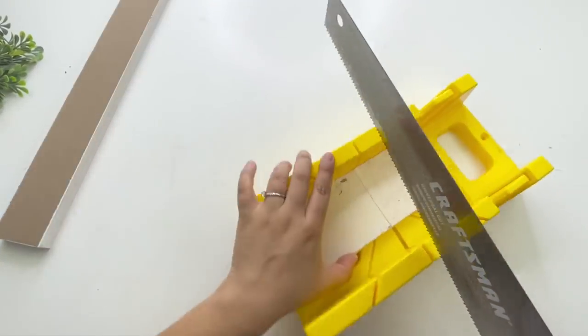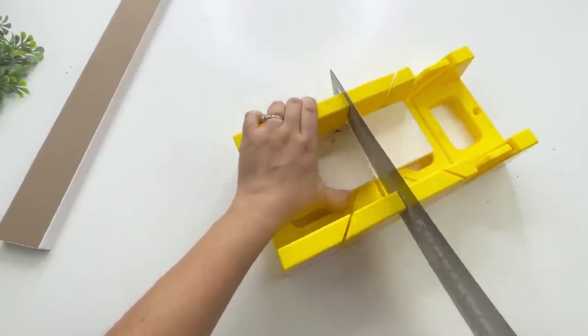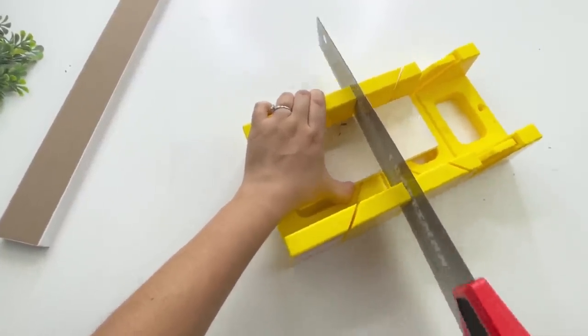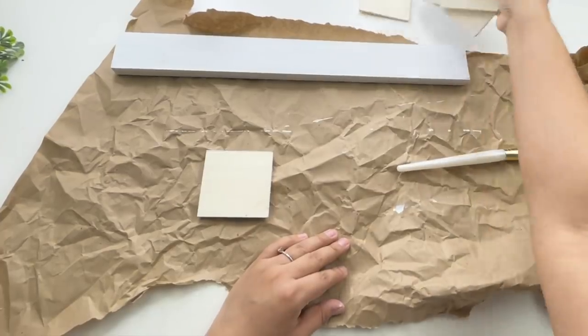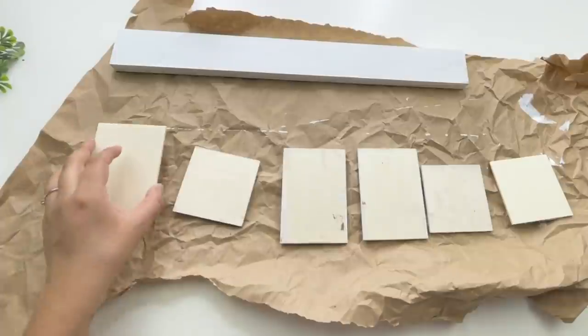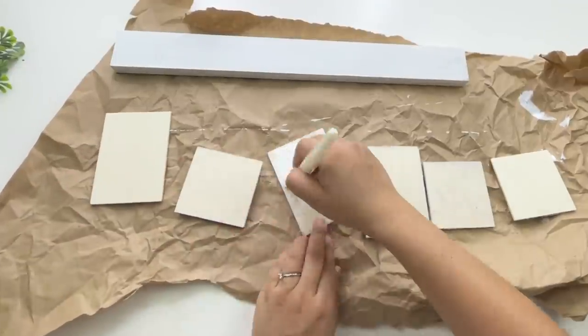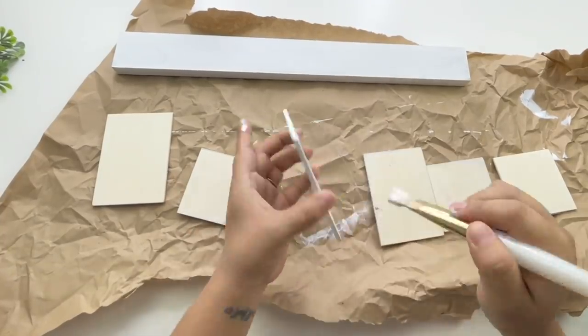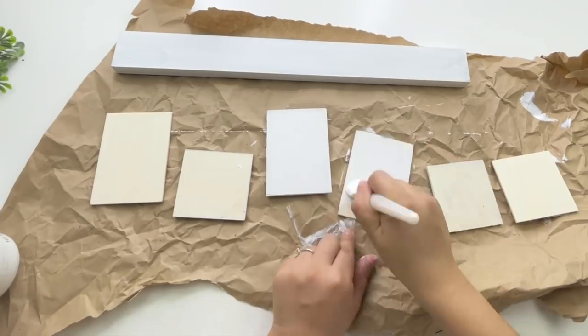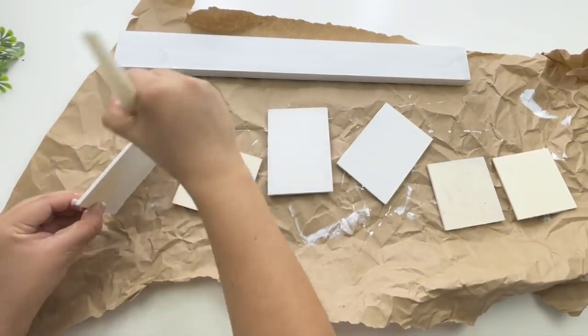To cut this, I will be using my hand saw in this miter box, which I got from Home Depot or Lowe's, one of those, but they are very inexpensive and they're so easy to use. So now I'm going to paint three of my wood pieces, the larger ones to be exact, white. And then the three other smaller ones, I will be using the Waverly chalk paint in the color steel.